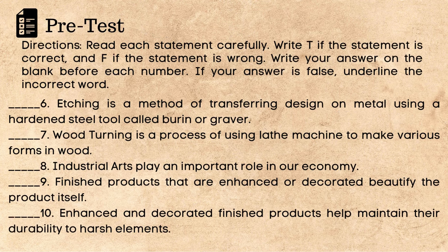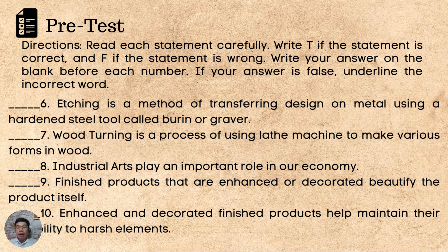6. Etching is a method of transferring design on metal using a hardened steel tool called burin or graver. 7. Woodturning is a process of using the lathe machine to make various forms in wood. 8. Industrial arts play an important role in our economy. 9. Finished products that are enhanced or decorated beautify the product itself. 10. Enhanced and decorated finished products help maintain their durability to harsh elements.